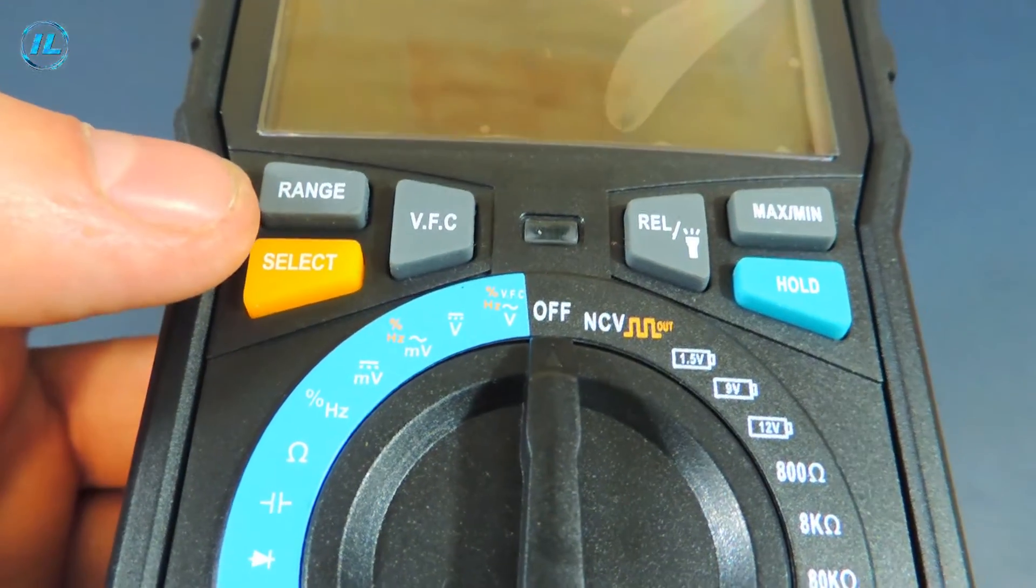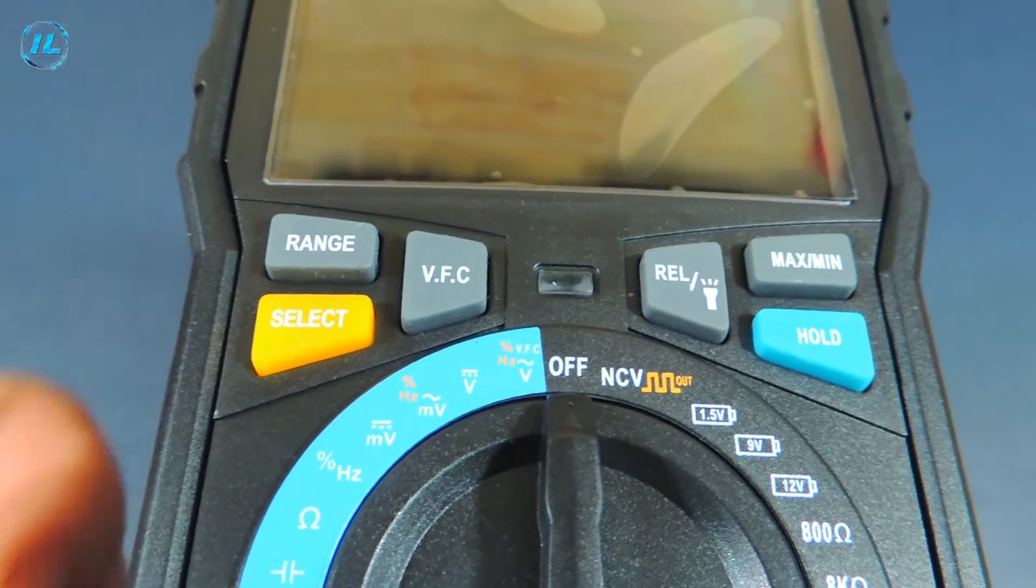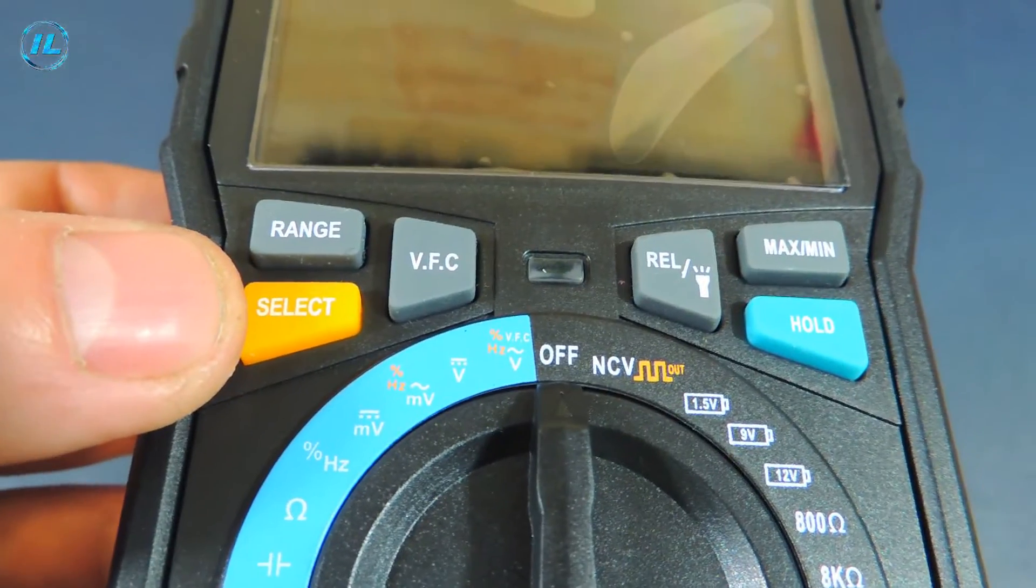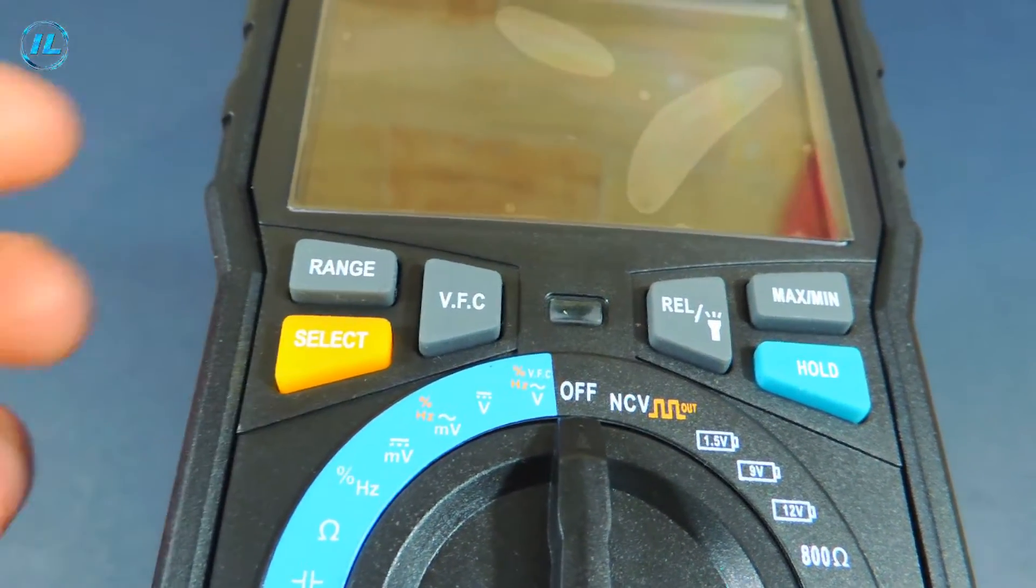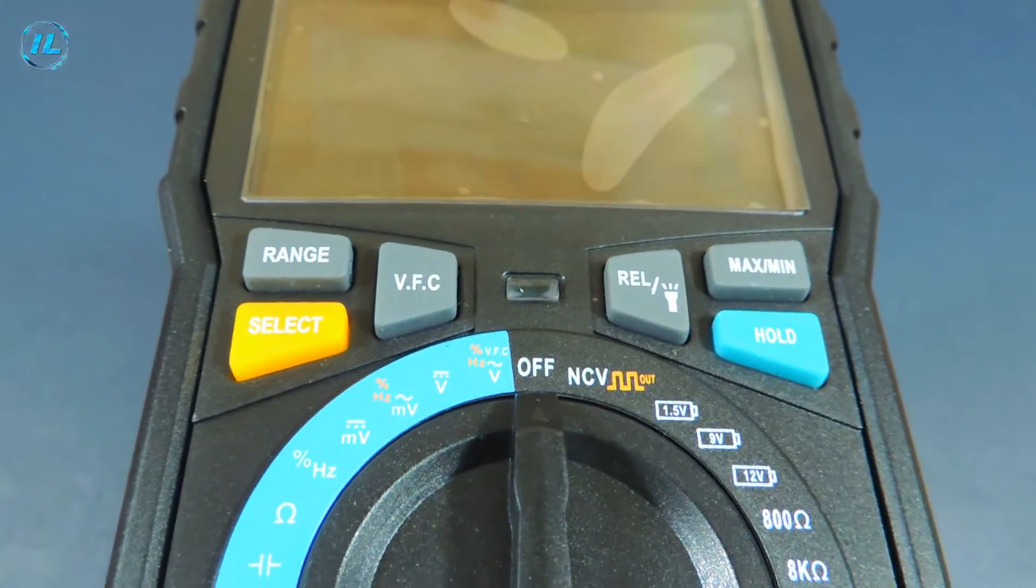There is also a stand. There are several function buttons under the screen. The first button is to switch the measuring range. Then select. Switching some measurement modes.